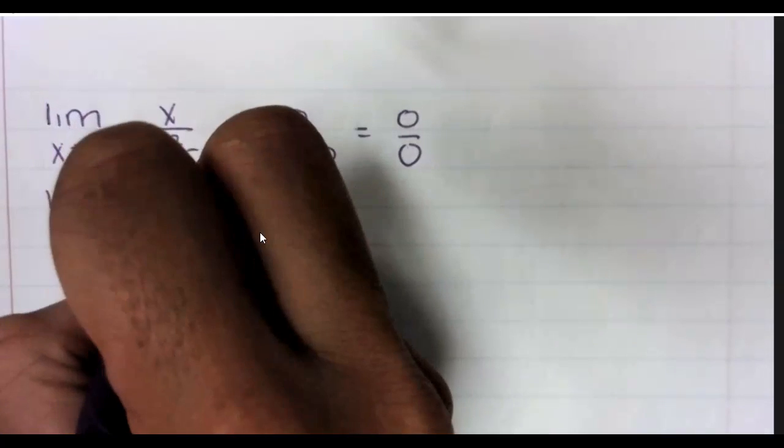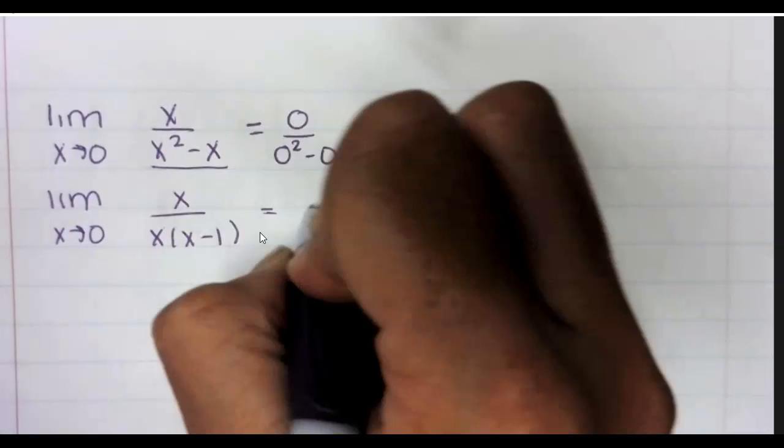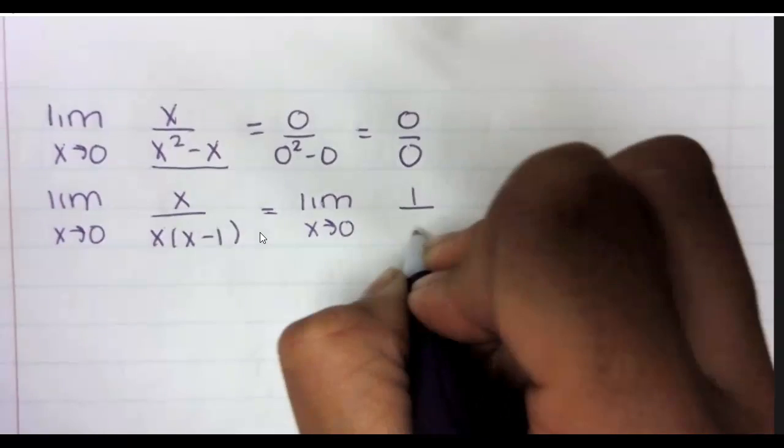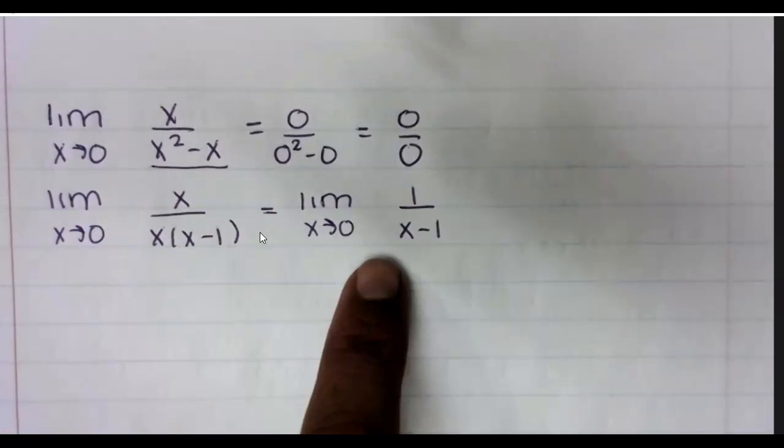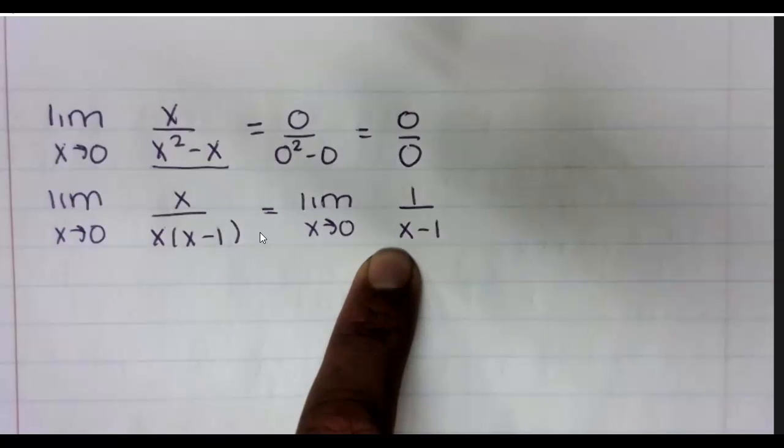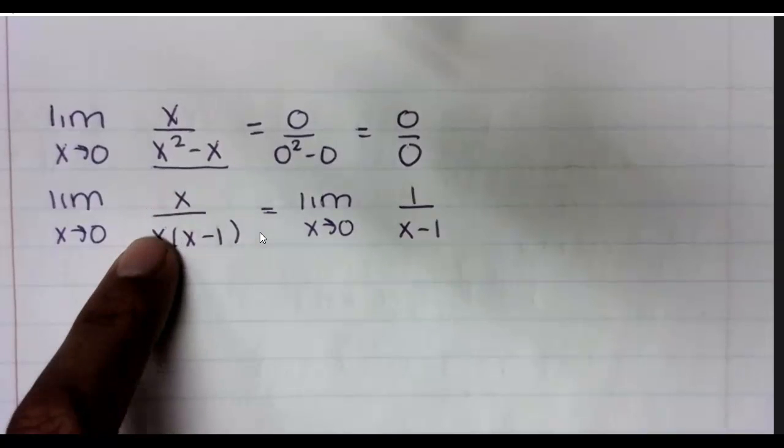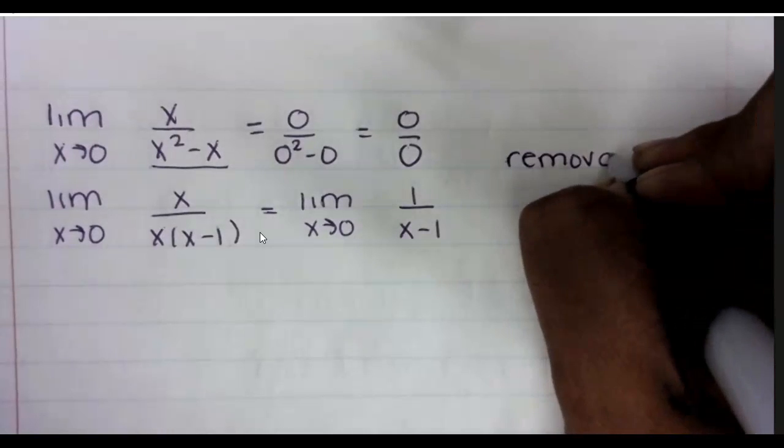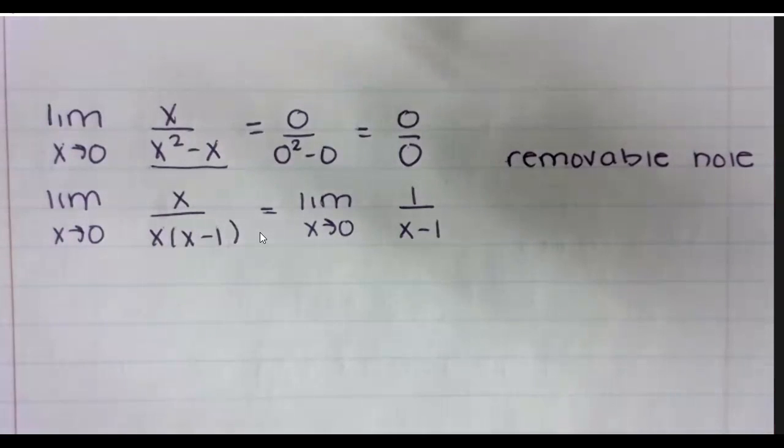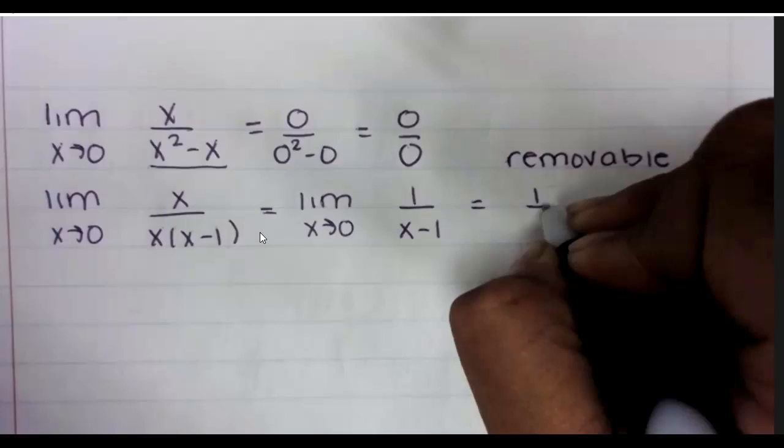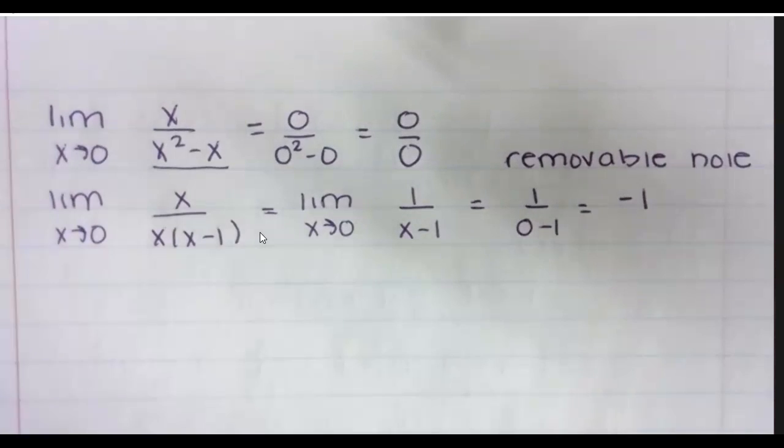And then what we want to do is say, okay, algebraically, I can factor out an x from the denominator. And then that equals the limit as x approaches zero of one over x minus one. So what that means is this function here behaves like this function here. It means that as we cancel these x's, they are what we call a removable hole, which we're going to talk a lot about on Friday and following. So therefore, this is one over zero minus one or negative one.